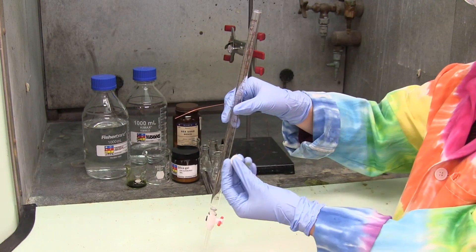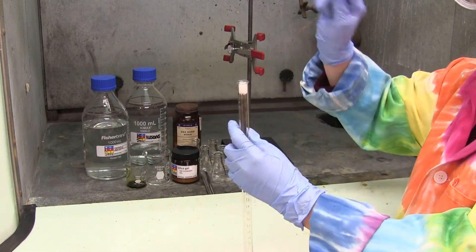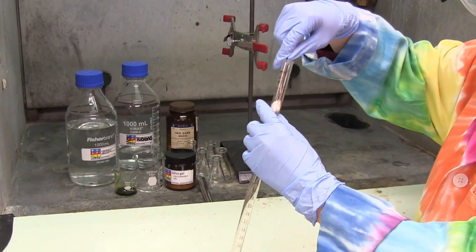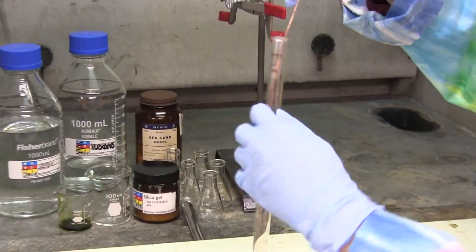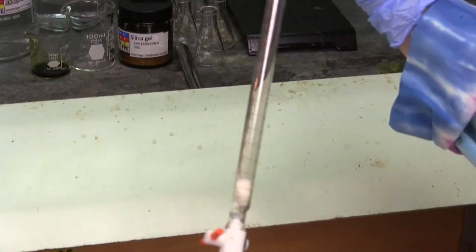First, a wad of cotton that isn't too big or small is packed into the burette using the copper wire. The cotton will keep the silica from dripping out when making the column and performing the elution. The burette is set into a stand with a raised beaker under it.